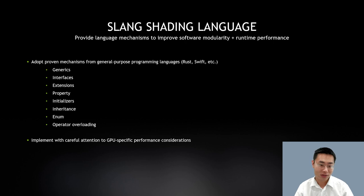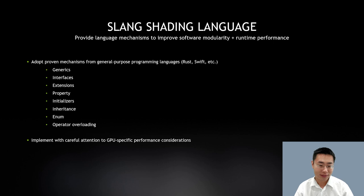Slang is focused on providing language mechanisms that can improve modularity, composability, and extensibility of a shader codebase, and enable good runtime performance at the same time. The compiler adopts mechanisms that have already proven their worth in general-purpose programming languages, such as generics, interfaces, extensions, properties, initializers, inheritance, enums, operator overloading, and so on. Rather than simply copying semantics from existing languages, Slang implements these features in ways that pay attention to GPU performance, so in some cases there are trade-offs and restrictions in return for uncompromised GPU performance.